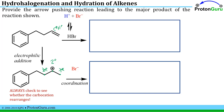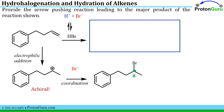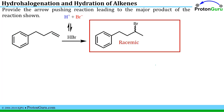Then we do the coordination step: pushing electrons from the bromide to share with the carbon that has the positive charge, making a fourth bond. Last, we check for stereocenters. We see a chiral center here. Remember the general rule — you can't start with achiral starting materials or intermediates and get one specific isomer. We have to have a mixture of R and S isomers forming in equal amounts. So we have a racemic mixture.